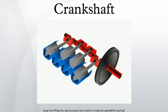In order to do the conversion between two motions, the crankshaft has crank throws or crank pins, additional bearing surfaces whose axis is offset from that of the crank, to which the big ends of the connecting rods from each cylinder attach.